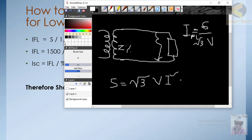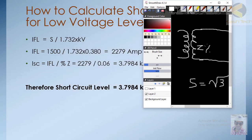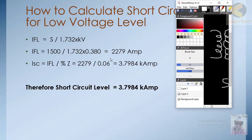The full load current is calculated as: I_FL = kVA / (√3 × V_kV). For this specific transformer, the full load current equals 2279 amperes at the low-voltage side.